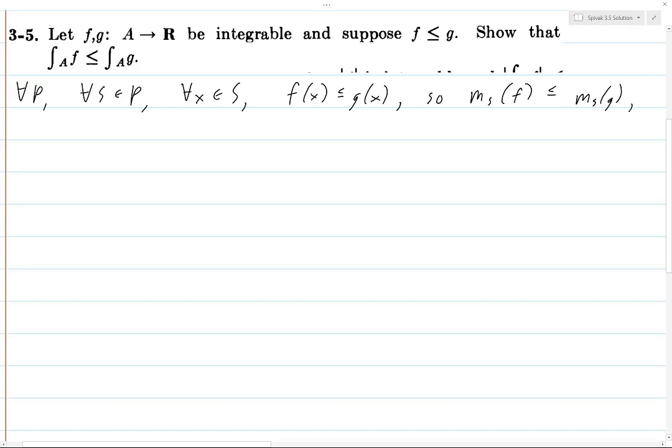And so then, because basically what we do is we take F of X is less than or equal to G of X, and we just take the infimum over all X on both sides of the inequality.